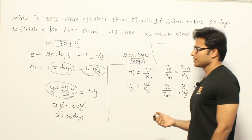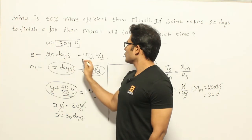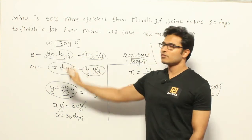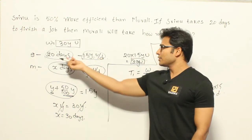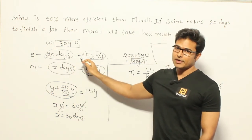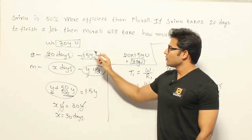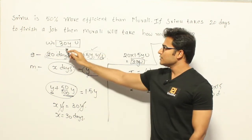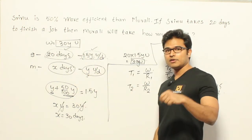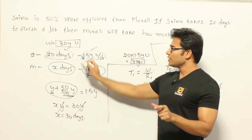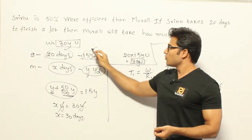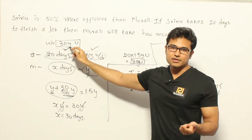The only mistake you might do here is: given that for 1.5Y the time is 20 days, you might try to find out how many days it will take for Y, and get less than 20 days — which means you are trying to apply a directly proportional relationship. But the number of days required to finish a project is inversely proportional to speed. The faster you are, the less time it will take.